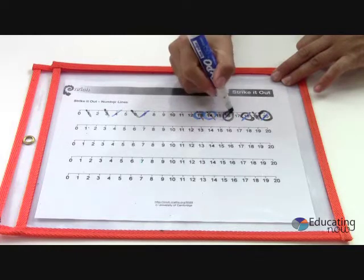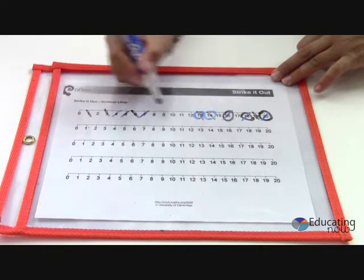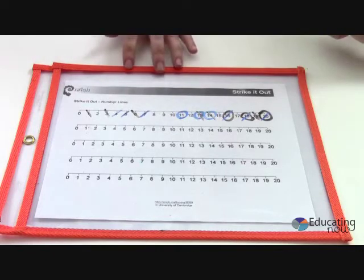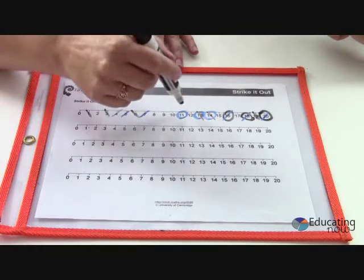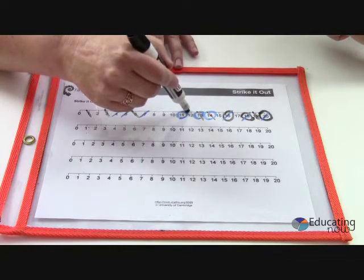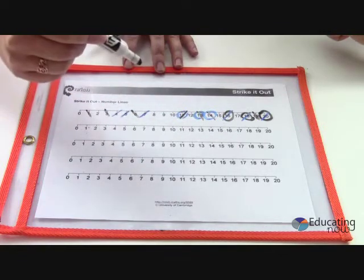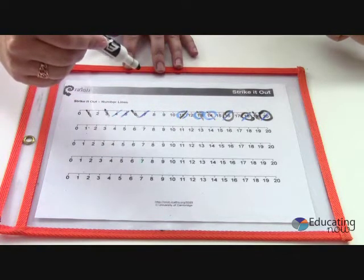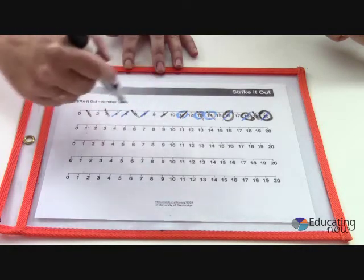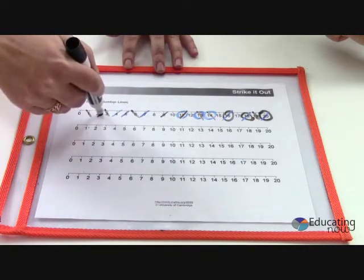16 take away 5 is 11 and 11 take away 9 is 2.